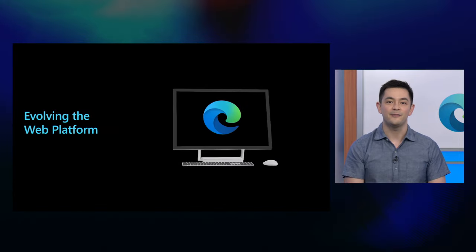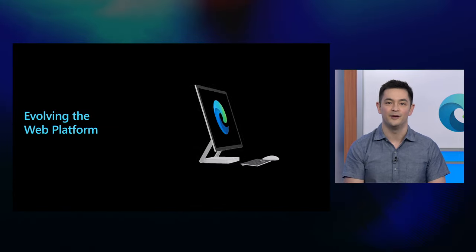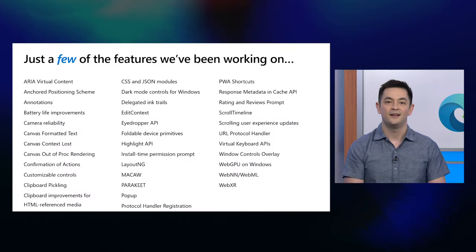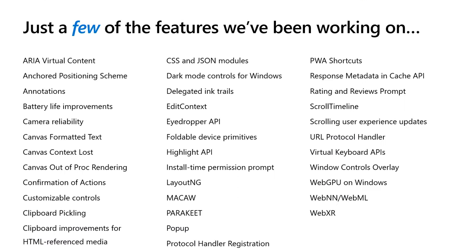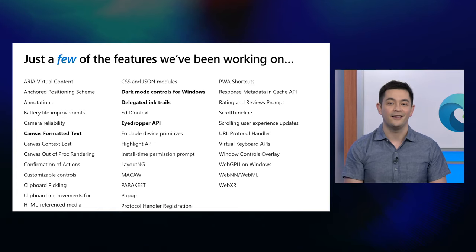Now let's spend some time talking about the changes we've made to advance the web platform over the past year. The Microsoft Edge team has been focused on listening to developers' unmet needs and evolving the web platform to include more native capabilities and to close performance gaps with native solutions. This has led us to invest in a wide range of capabilities, such as delegated inking, canvas formatted text, the eyedropper API, dark mode controls, and more — capabilities that have or will be shipping or coming to origin trials soon.